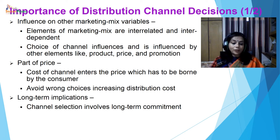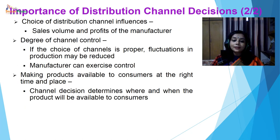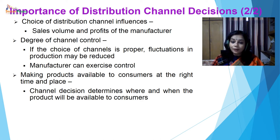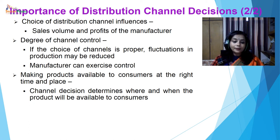It has long-term implications. Channel selection involves long-term commitment, and great care should be taken to build long-term healthy relations with channel members. Choice of distribution channel influences sales volume and profits of the marketer. Degree of channel control also depends upon what type of channel you have selected. If the choice of channel is proper, fluctuations in production may be reduced and the manufacturer can exercise control. Making products available to consumers at the right time and right place is possible if you have selected the best channel. Channel decision determines where and when the product will be available to the consumers.